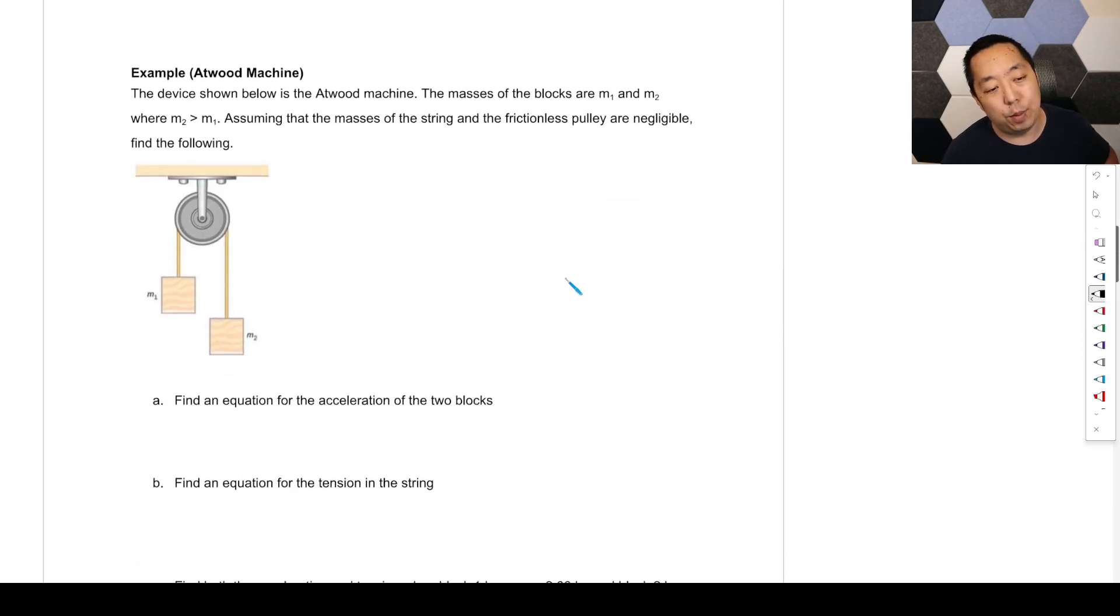So this is a classic example, an Atwood machine. Masses of the blocks are M1, M2, and we're just going to say M2 is bigger than M1. Assume that the masses of the string and the frictionless pulley are negligible, and find the following. Find an equation for the acceleration of the two blocks. So first of all, they're telling us M2 is bigger than M1. That means we think this guy's going to accelerate downward, this guy's going to accelerate upward. First step, I skipped the first step, but that's really important that you understand that consistency there.